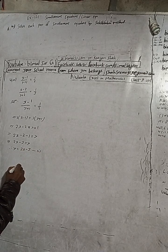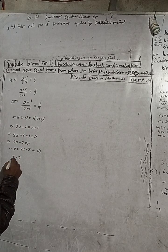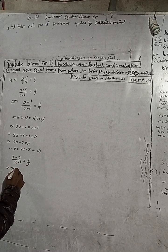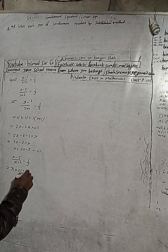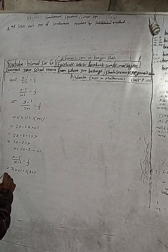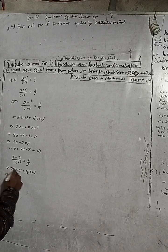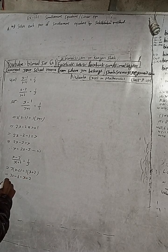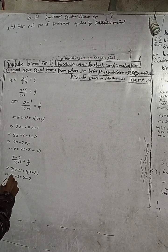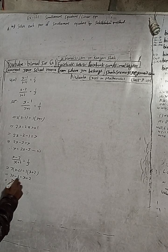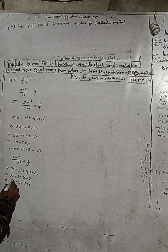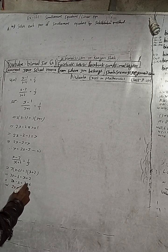Now take this equation: x minus 2 by x plus 2 is equal to 1 by 3. Cross multiply this, so 3 into x minus 2 is equal to 1 into x plus 2. So this is 3x minus 6 is equal to x plus 2. Taking x to this side: 3x minus x gives 2x, and minus 6, so 2x is equal to 2 plus 6.